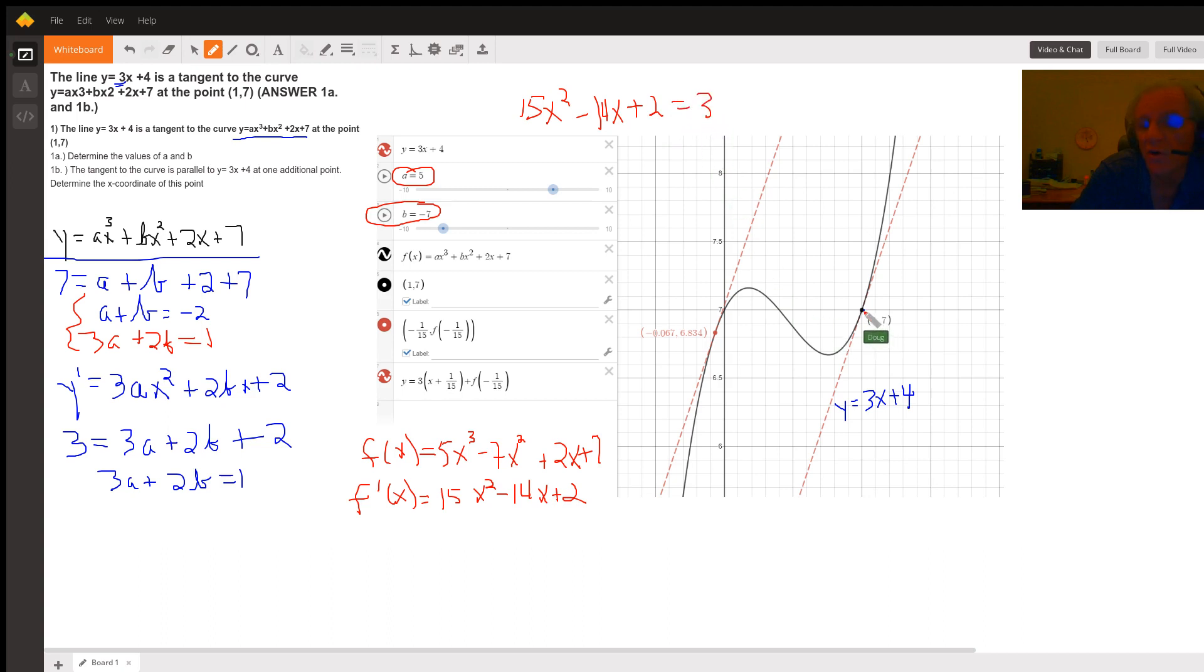There should be 2 points. We already know 1. 15x squared minus 14x minus 1 equals 0. You can solve that by factoring. I won't go through the steps, but 15x minus 1 times x minus 1 is the factoring of that left-hand side. So x equals 1, which we knew, and x equals negative 1/15.